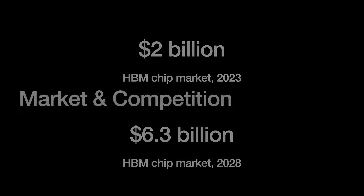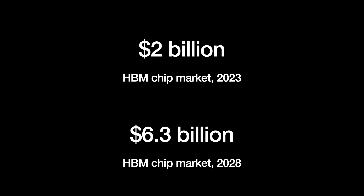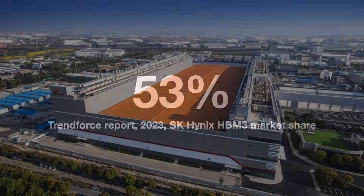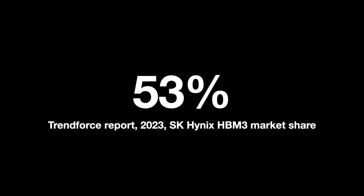Prior to ChatGPT and the AI boom, HBM was not a big market — about 1.5% of the larger dynamic RAM market. But it is growing. According to market tracker Mordor Intelligence, the HBM chips market is forecasted to grow from $2 billion in 2023 to $6.3 billion by 2028. Currently there are three major suppliers of HBM memory, two of which are Korean. SK Hynix is the leading supplier, having pioneered the standard in conjunction with AMD. According to a recent TrendForce report, in mid-2023 Hynix had just over half of the HBM market with 53% share.